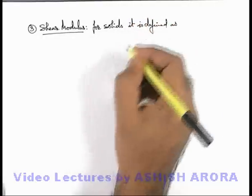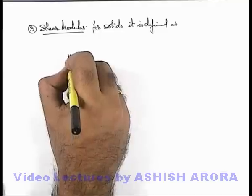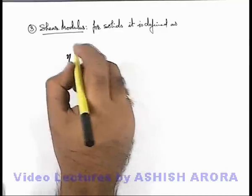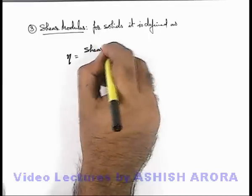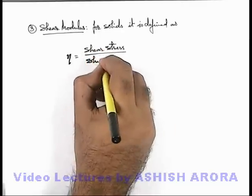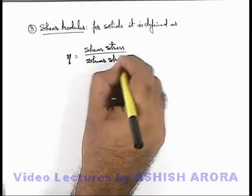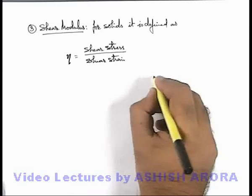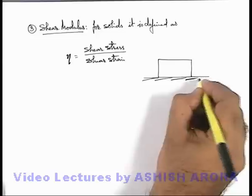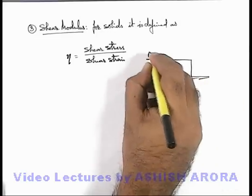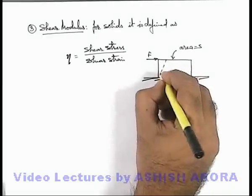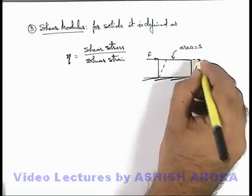It is defined as shear modulus. The symbol used for shear modulus is the Greek letter eta, which is written as shear stress by shear strain. And as we already discussed for a body which is rigidly fixed on ground, if tangentially we apply a force F and if its surface area is S, and say the body is twisted by an angle theta...